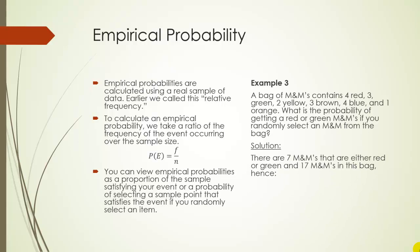So there are seven M&Ms that are either red or green and seventeen M&Ms in this bag. Hence the probability of getting a red or green M&M would be seven out of seventeen.